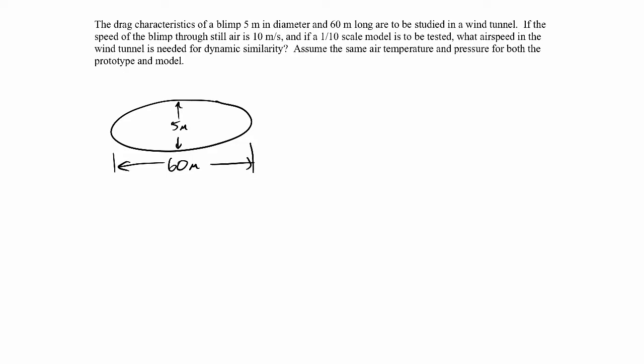And we're told that we're going to study this in a wind tunnel. So if the speed of the blimp through still air is 10 meters per second, and if a 1/10 scale model is to be tested in the wind tunnel, everything is 10 times smaller. So this would be 6 meters, and this would be a half a meter.